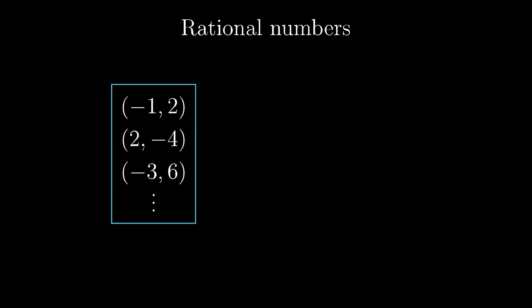But instead of picking a single representative, we simply take all the available fractions and pack them into a set. This set will be considered as the single rational number A, which is equal to -1/5 as well as to 2 over -4, and so on.